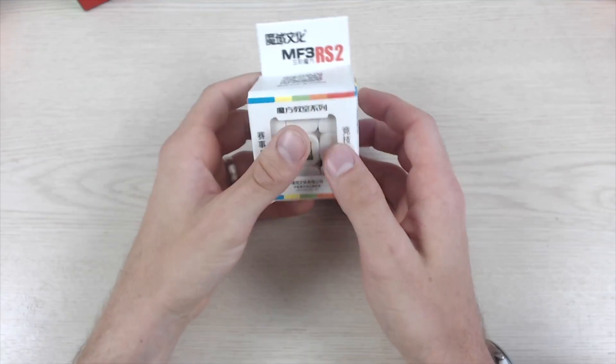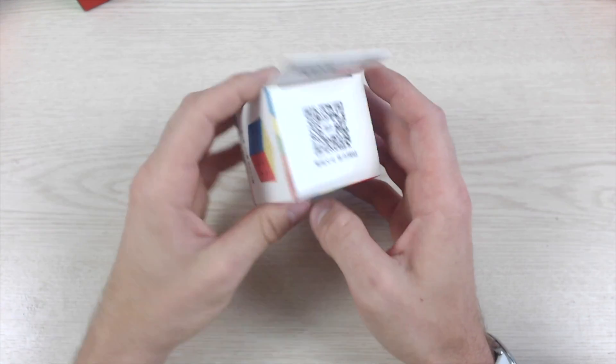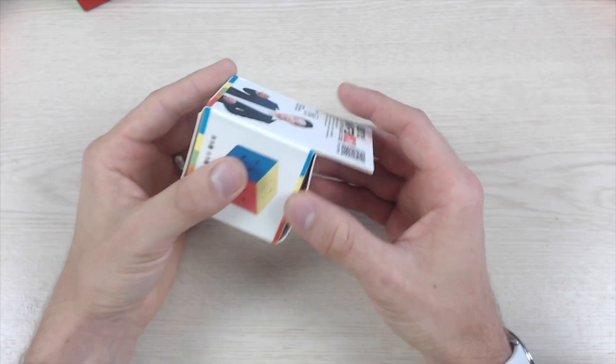Hey, Shania from SpeedCubeView.com. So we have the MF3RS 2. This is the second version of the MF3RS. Let's take a look at it.